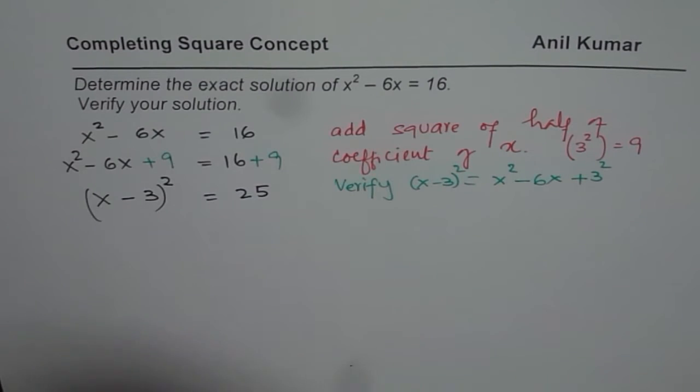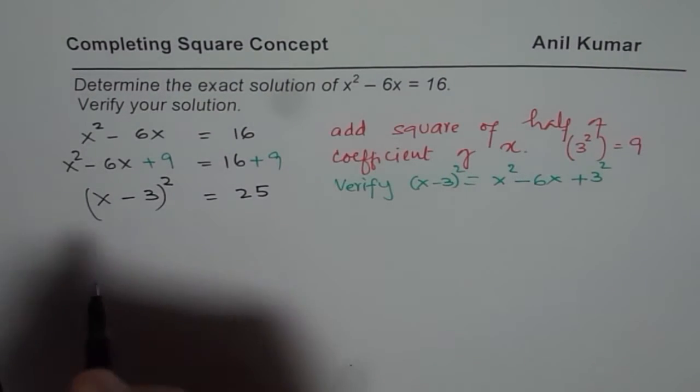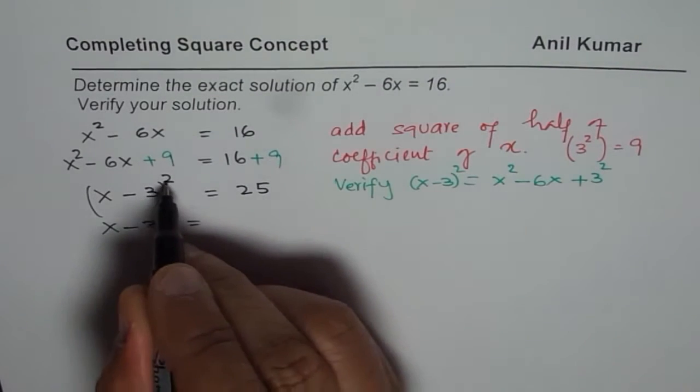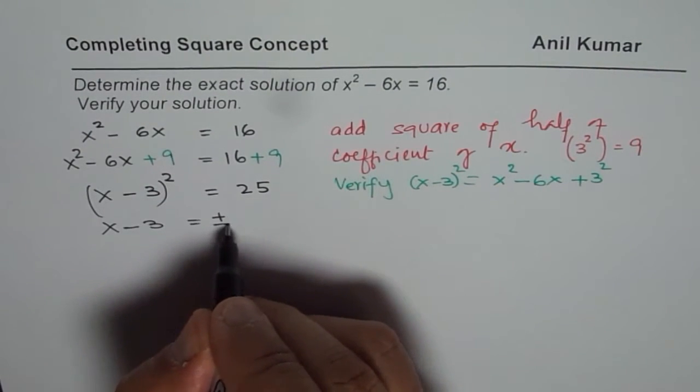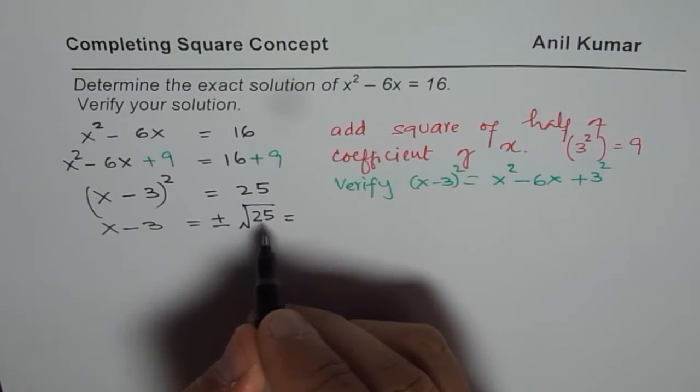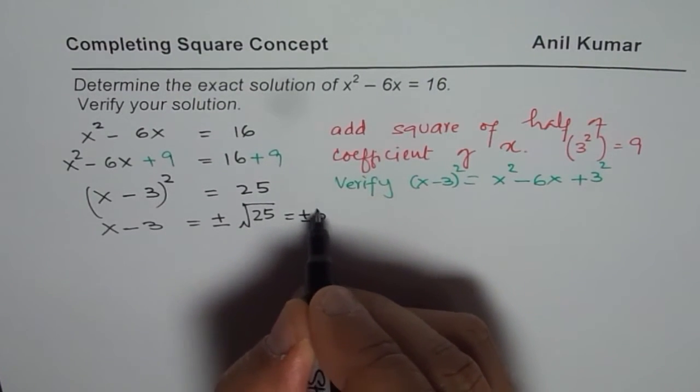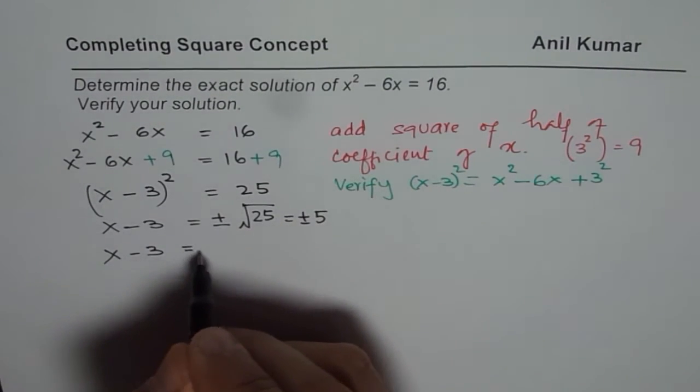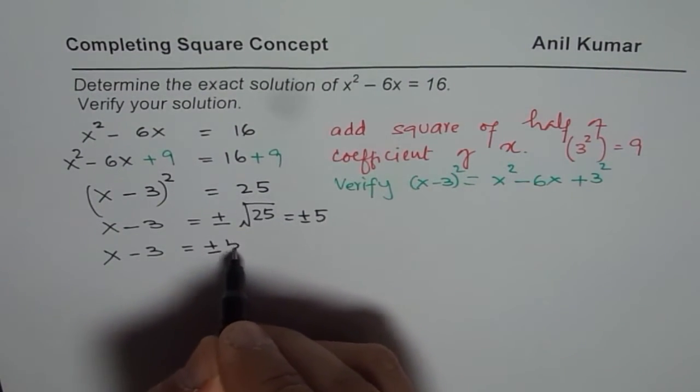Now, next step here is square root both sides. So, when you square root, you get x minus 3 equals to, whenever you square root, you have to write plus and minus. So, square root both sides. Square root of 25 is plus minus 5. So, we get x minus 3 equals to plus and minus 5.